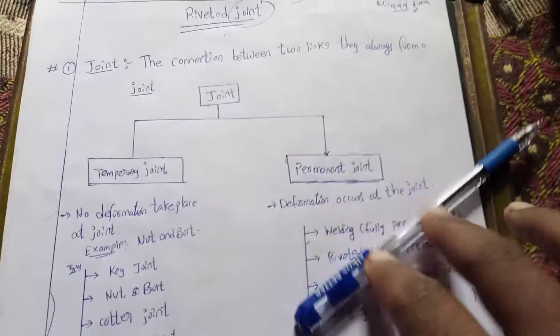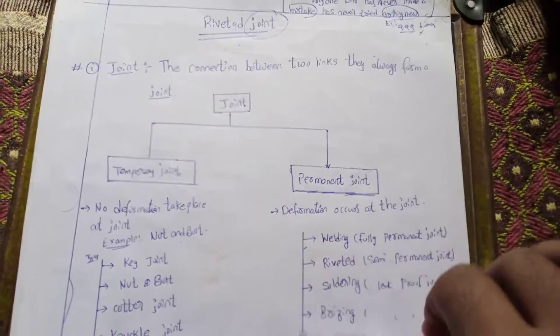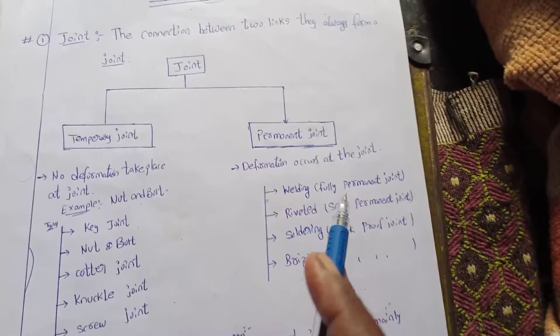For example, even my hand - this is the link here, and this is the joint. So there are two pieces. Mainly two types.